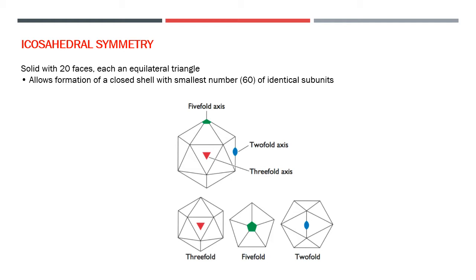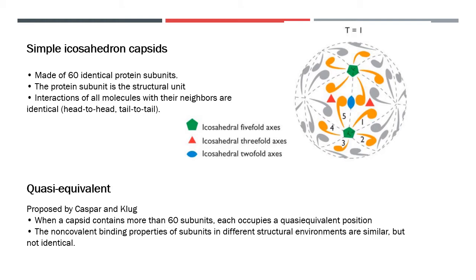The simple icosahedral capsid is made up of 60 identical protein subunits. The protein subunit is the structural unit of the capsid. We know that the capsid is made up of capsomers, and capsomers of protomers. The interaction of all molecules with their neighbors is identical — head-to-head and tail-to-tail interactions are seen.